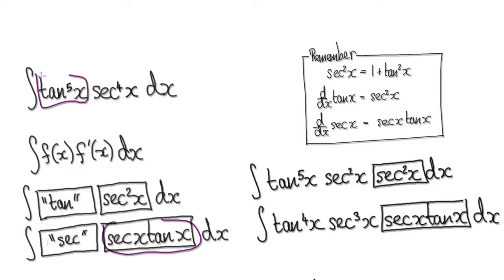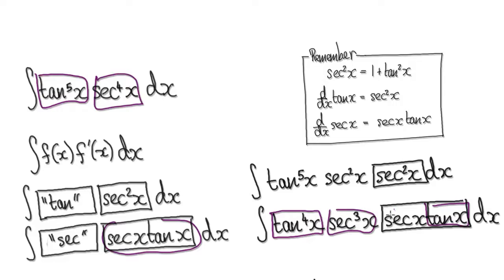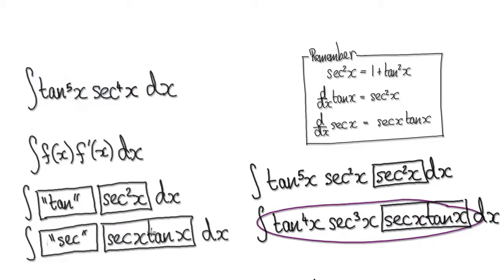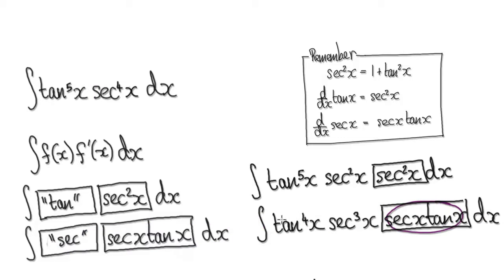So if you look at this, this thing here is the derivative of secant. So if you can get everything in terms of secant, then you know it's easy to integrate. You can imagine tan to the power of 5 as tan to the power of 4 and then another block of tan. Secant to the power of 4 is secant to the power of 3 times secant. This thing here is the exact derivative of secant, so if you can somehow turn this into a secant, it's going to be easy to integrate.